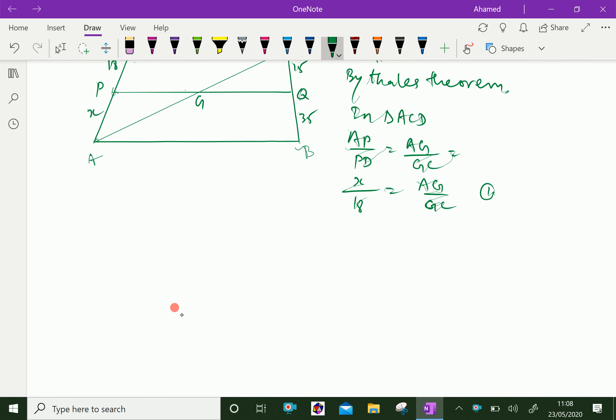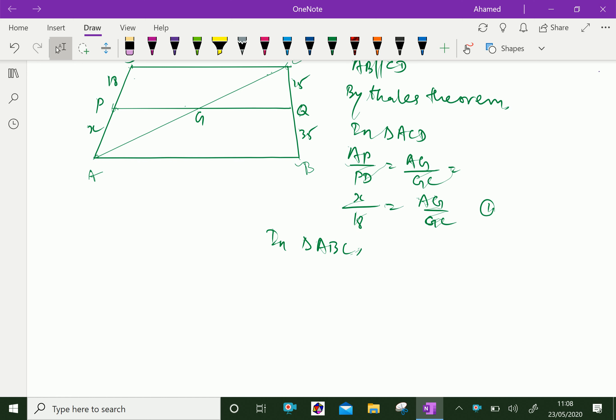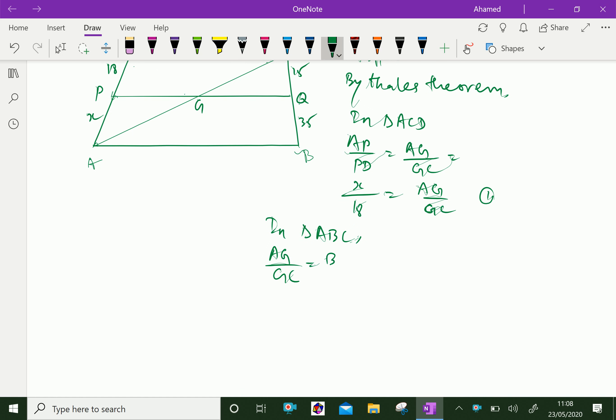Similarly, in triangle ABC, we can see AG over GC equal BQ over QC.